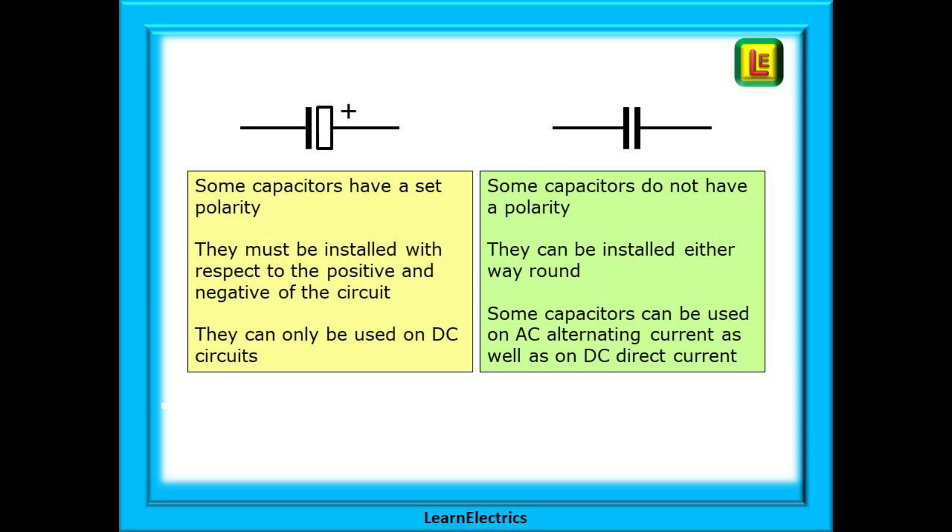Some capacitors have a set polarity. They must be installed with respect to the positive and negative of the circuit. This type can only be used on DC circuits but some capacitors do not have a polarity. They can be installed either way around and this type of capacitor can be used on AC alternating current as well as on DC direct current.